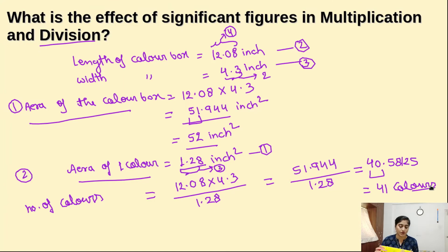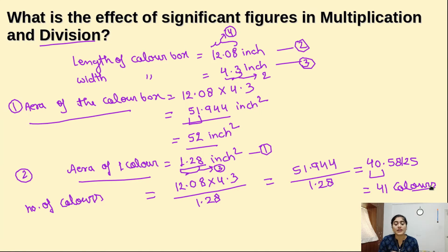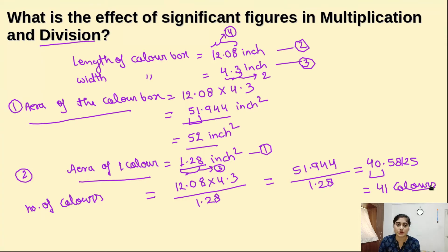So that is how we choose significant figures for multiplication and division. In multiplication and division, whichever value has the least number of significant digits — among all the values being used — that is the number of significant figures we take in the final answer. The same rule applies for division as well.